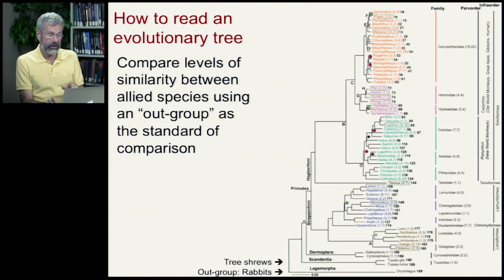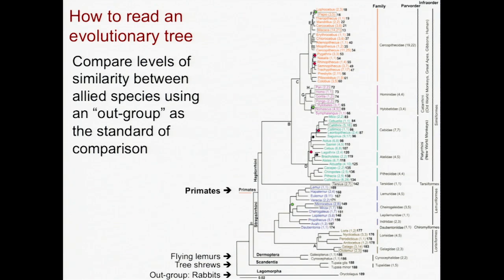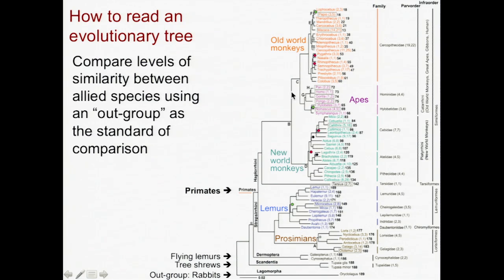The next group is the tree shrews, and then we have flying lemurs, and then we get to the primates properly — the modern primates. As we'll see later when we look at primate classification, there are lemurs and prosimians at the bottom. These split off a long time ago from what became the new world monkeys, which split off from the old world monkeys, and from them come the apes. These old world monkey species are all more closely related to each other than they are to the apes, and the apes are all more closely related to each other than to any monkey. Very short branches mean a very recent divergence; the longer the branch, the farther ago the split took place.